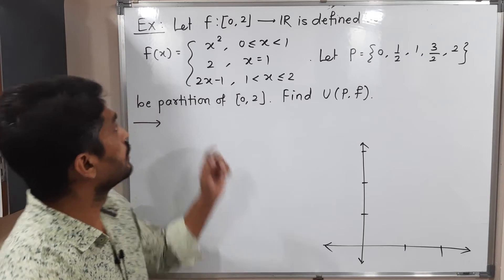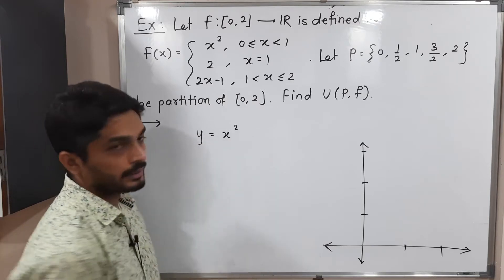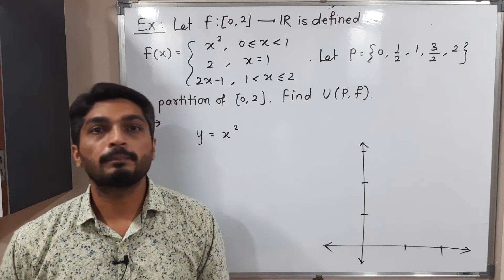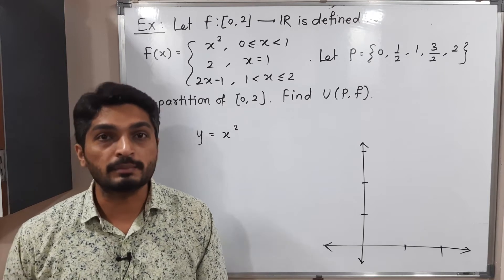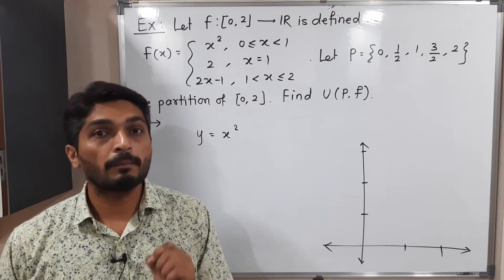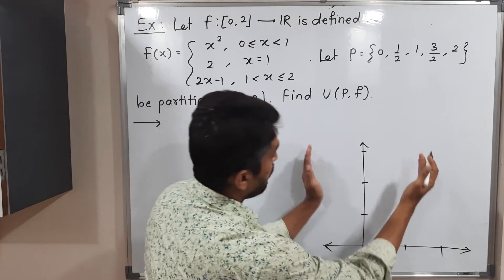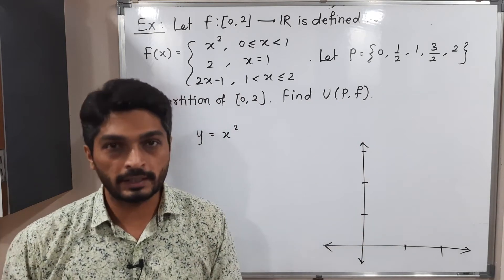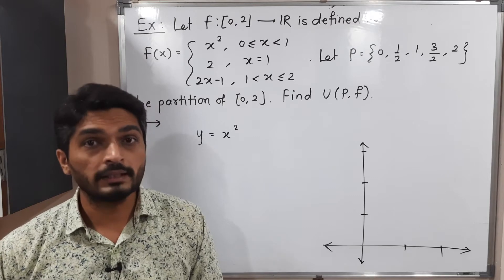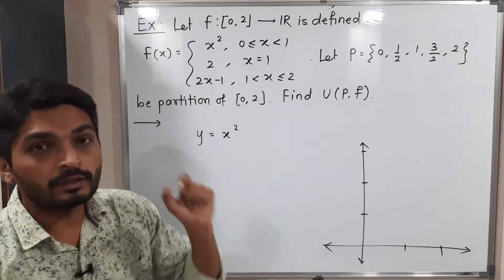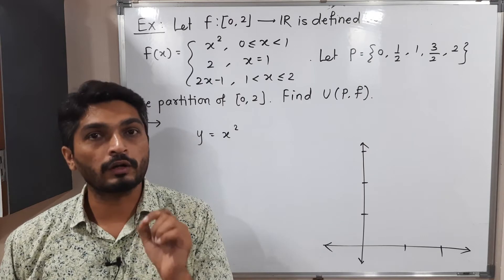Let us consider the first definition: f(x) = x². Replacing f(x) by y, we have y = x². The power of y is one and the power of x is two, so it represents a parabola. Since the power of y is one, the parabola is symmetric about the y-axis, and since y has a positive sign, it opens in the upward direction — a standard parabola passing through the origin. We have to draw this parabola only for the domain [0, 1).